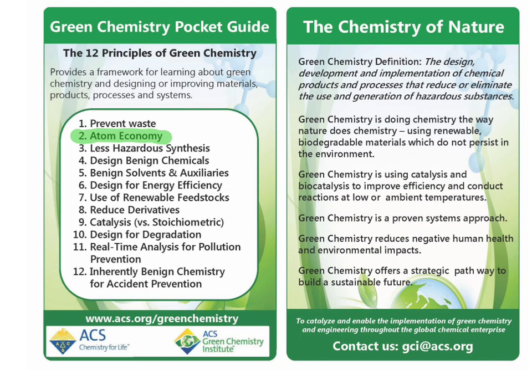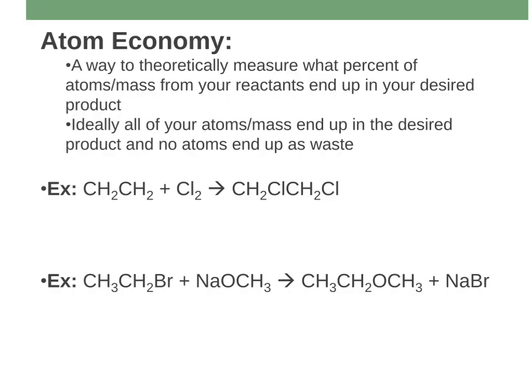Atom economy is a metric that we can use when we're trying to discuss how green a reaction is. It's a way to theoretically measure what percent of the atoms — or at least the mass of those atoms — end up in your product. What's the mass of all of the reactants you're putting into a reaction, and how much of that ends up in your product? Ideally, you want all of your reactants to end up in your product. You don't want to waste a bunch of stuff — you don't want a bunch of extra atoms, extra mass that you're just going to have to throw away.